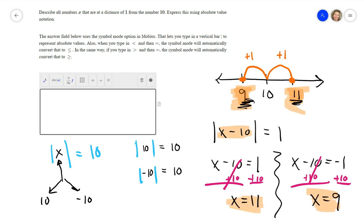And they said, describe all numbers x that are at a distance of 1 from the number 10. Express this using absolute value notation. At a distance of 1. Okay, well, that's what I'd be typing in there in the black pen. I'd be going absolute value of x minus 10. I see they're talking about less than and equal to, but they said at an exact distance of 1. There's only two answers to that. All numbers that are at a distance of 1, it should just be equals 1.